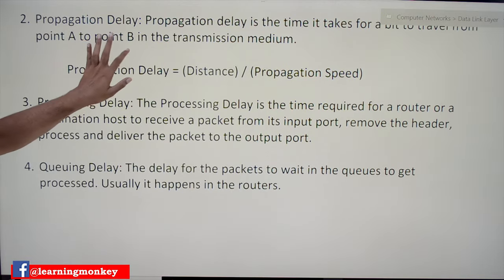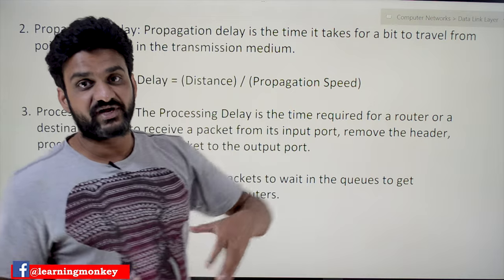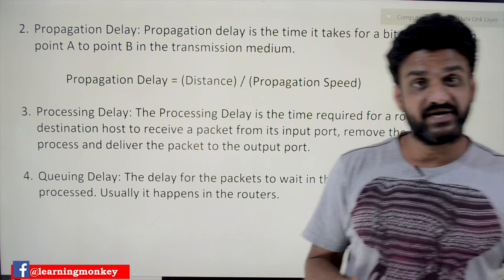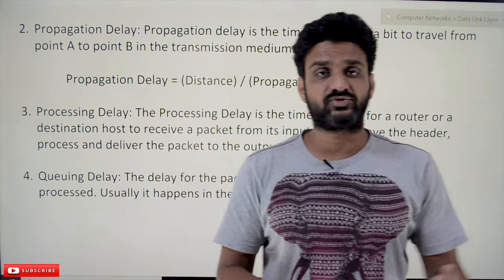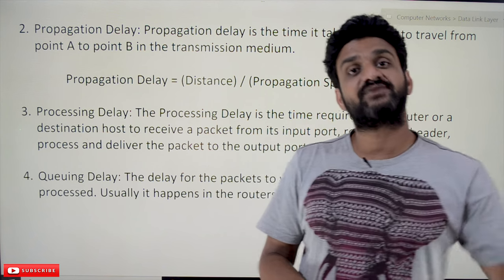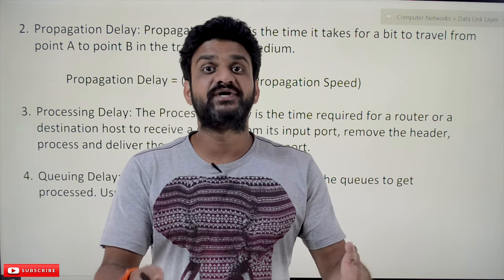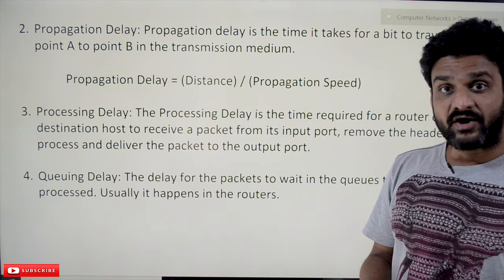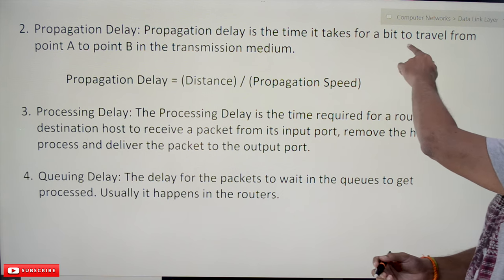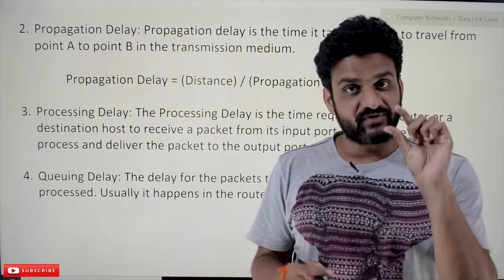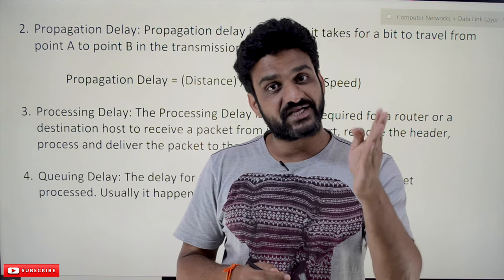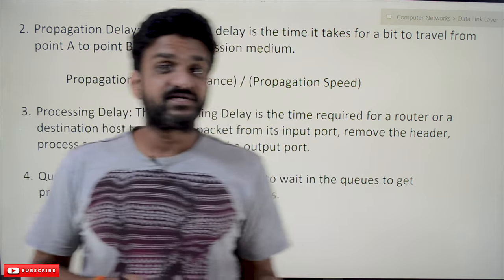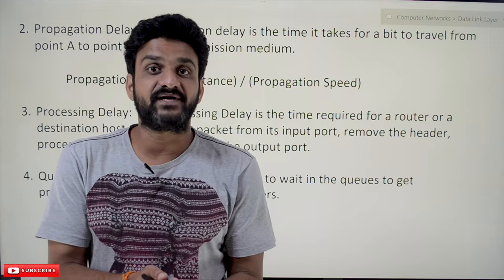The second one is propagation delay. The name itself states that propagation delay is the time taken for a bit to transfer from one system to another — from point A to point B in the transmission medium. There are two different transmission mediums: wired and wireless. Propagation delay is the time for a single bit to travel from one point to another point.